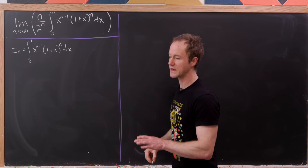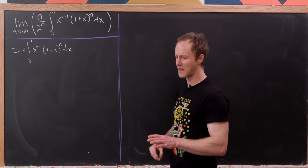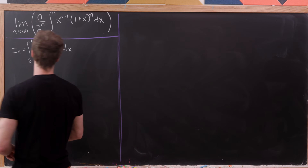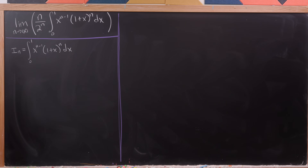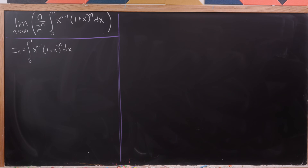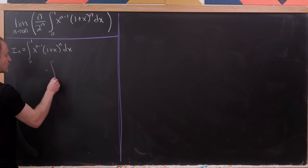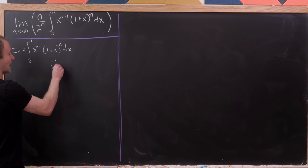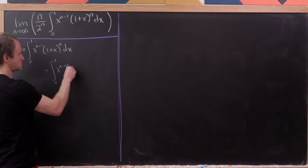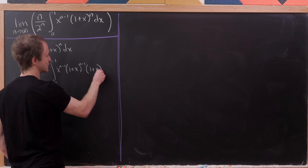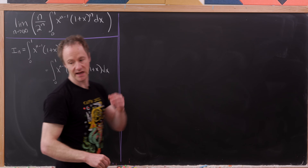What are we going to do with that? I'd like to split a portion of this 1 plus x to the n off so that it has the same exponent as the power of x. So we're going to write this as x to the n minus 1 times 1 plus x to the n minus 1 times 1 plus x dx.